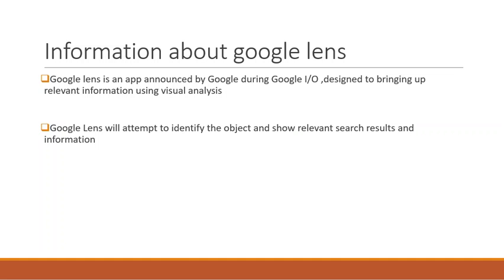Google Lens is designed to bring up relevant information using visual analysis. It will attempt to identify objects and show relevant search results and information. The smartphone camera will no longer just see, but also help you take action. Lens is also integrated with Google Photos and Google Assistant apps. It is available for Android and iOS devices and is a brilliant camera application which can interpret, figure out, and communicate information.